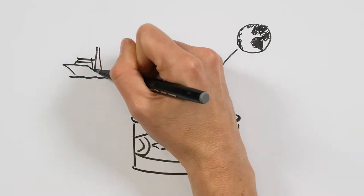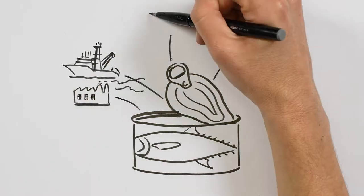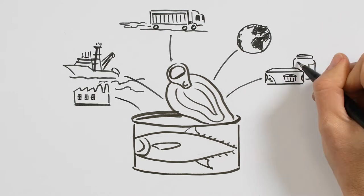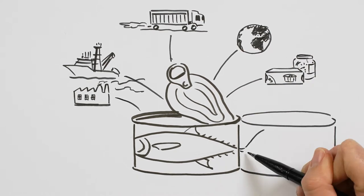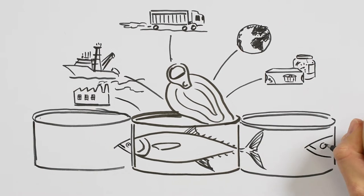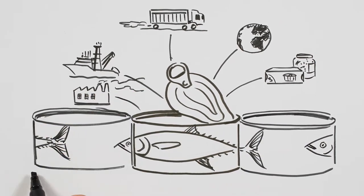Tuna is fished in one ocean, processed in a completely different part of the world, labeled in yet another, and then makes several more stops before it's sold in retail stores. Knowing more about its journey makes us better informed consumers and reinforces our commitment to safe, sustainable food.